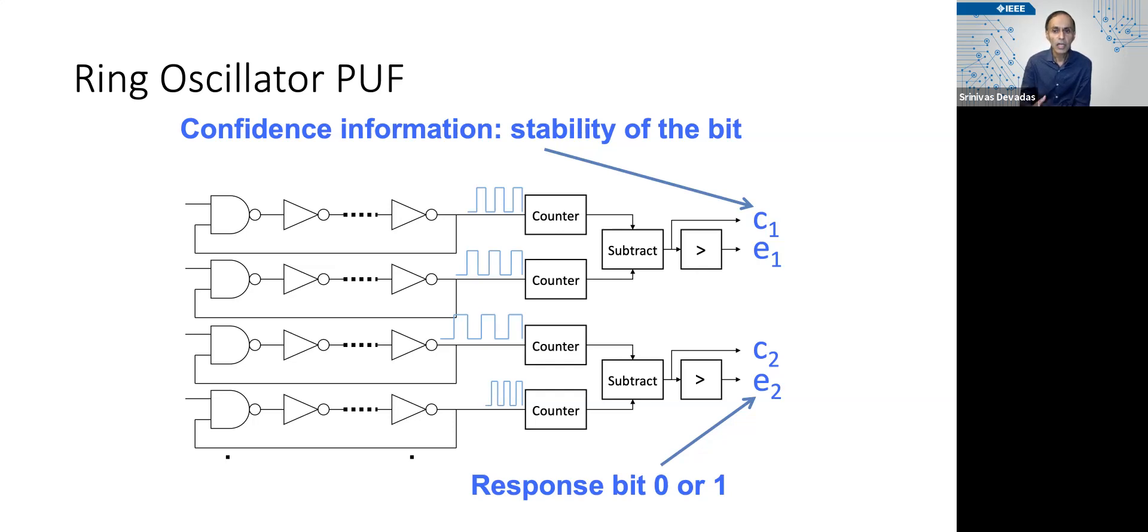Even though the temperature changes, the first ring oscillator is going to be slower than the second, which means that our eᵢ value is going to be stable. And we can get a hint as to which of these eᵢ values is stable by looking at the difference in the counter values.